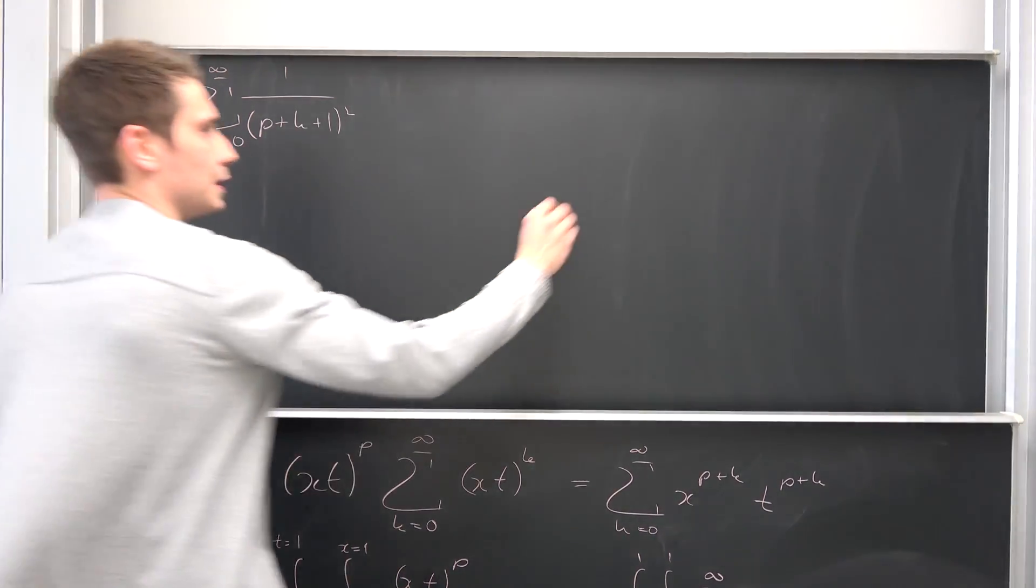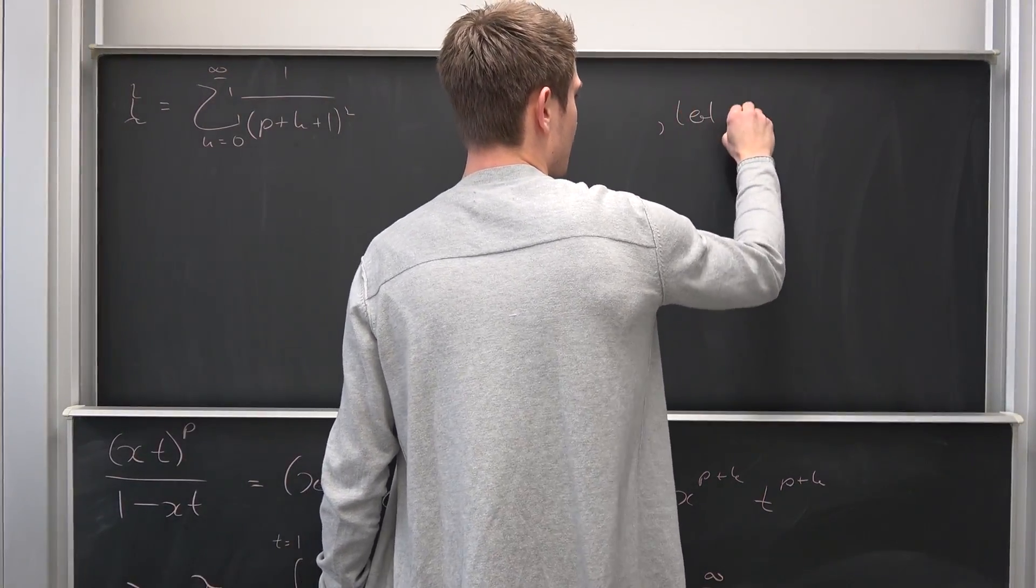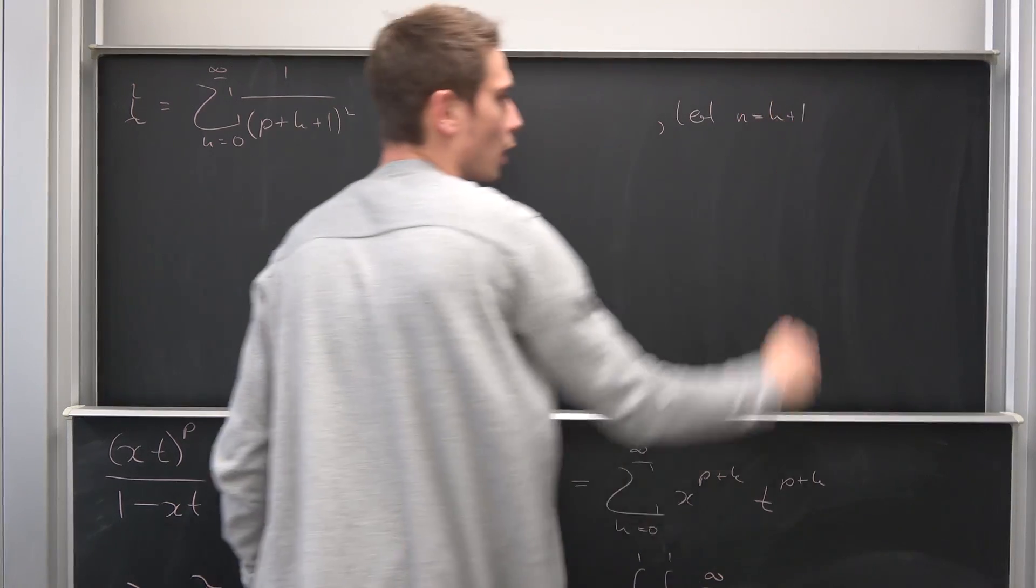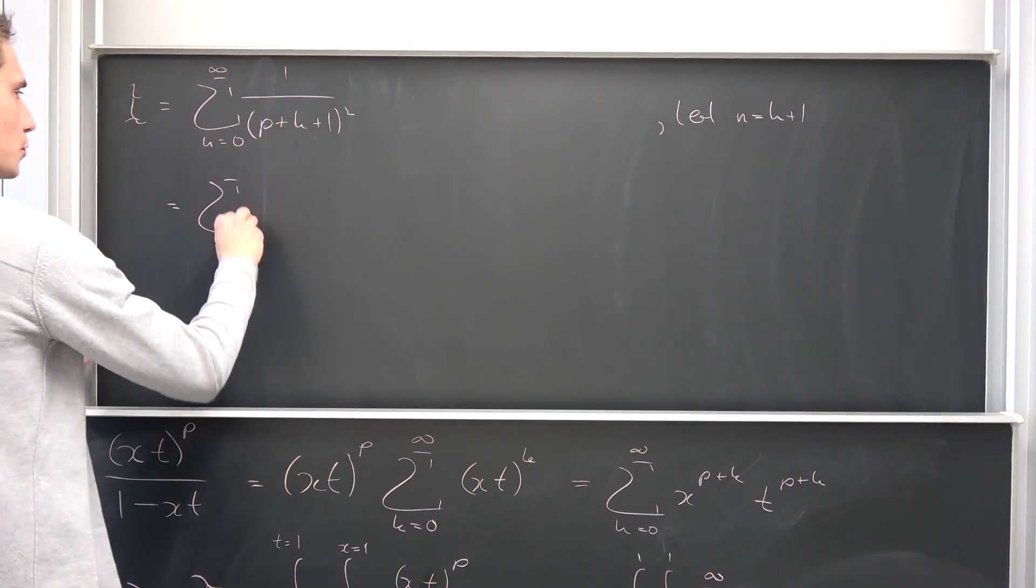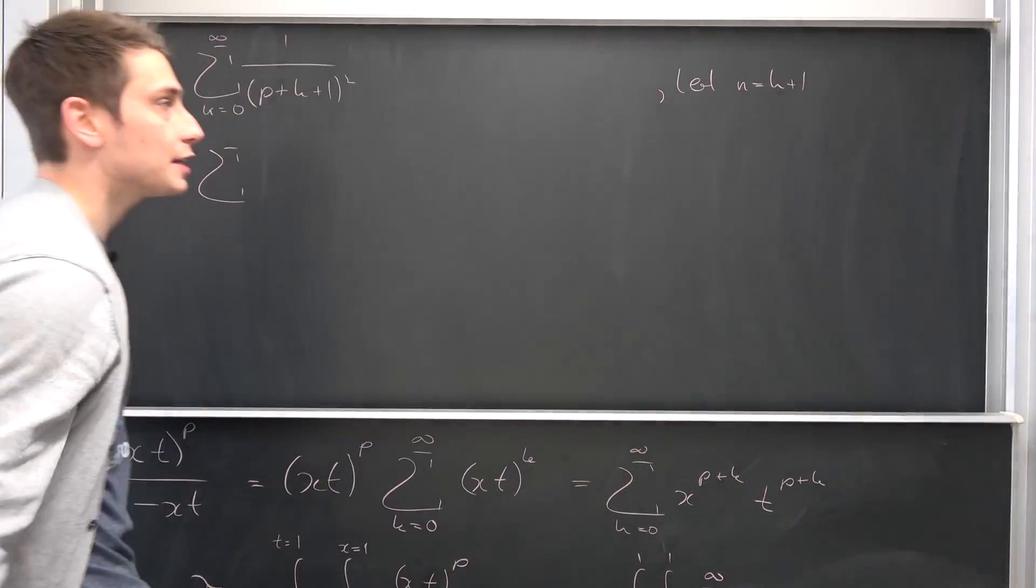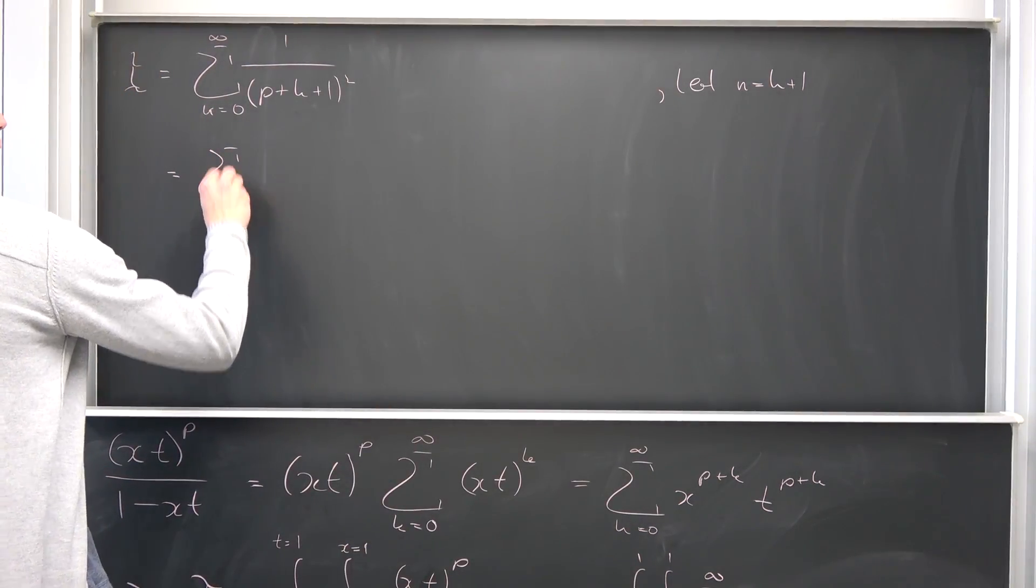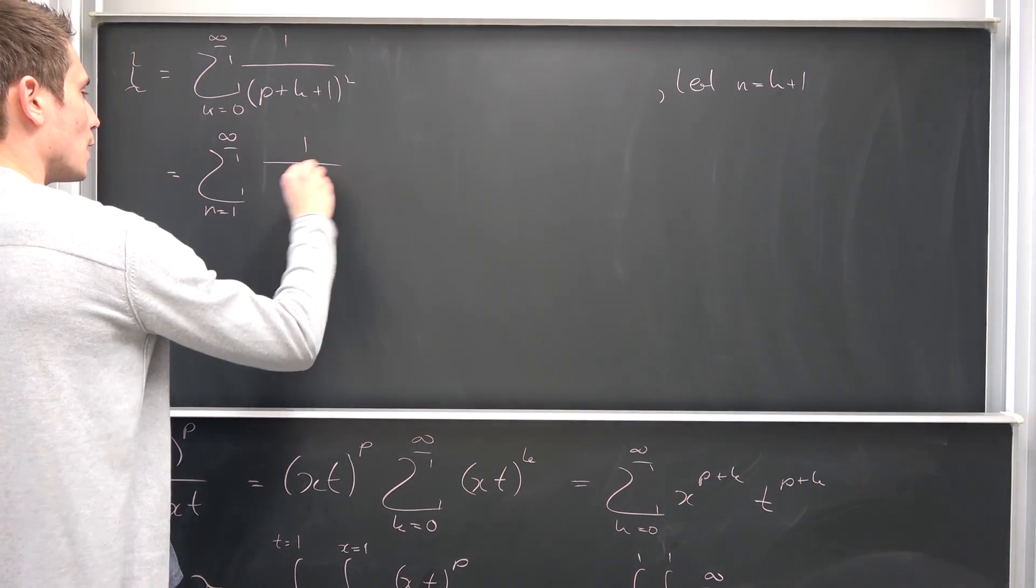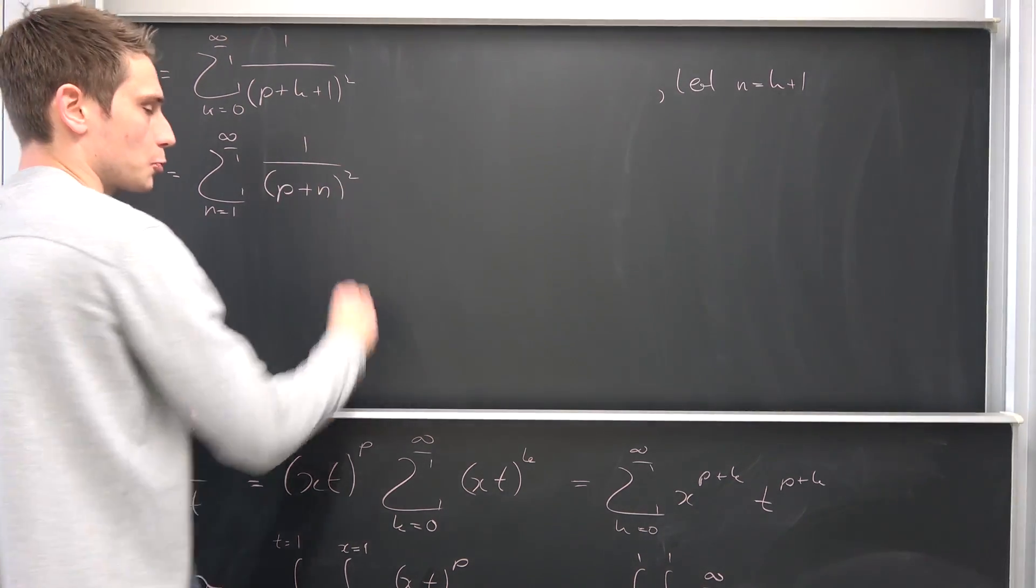Why not make a little change of index? For example, let n be equal to k plus 1. Then our sum runs from, if we plug 0 into this change of index, n is going to run from 1 to infinity of 1 over p plus n squared.